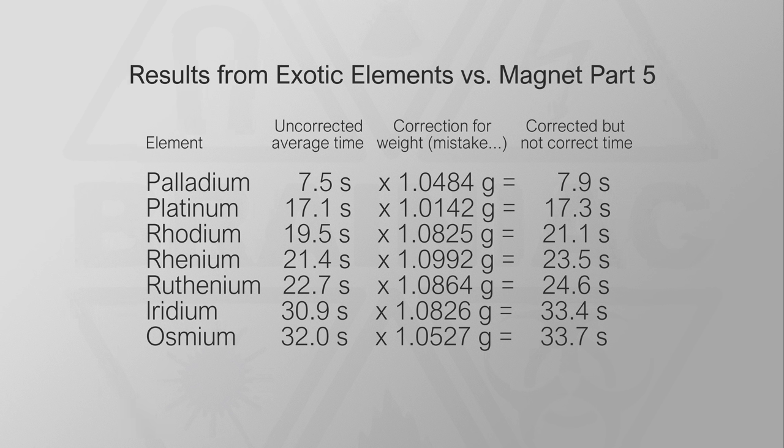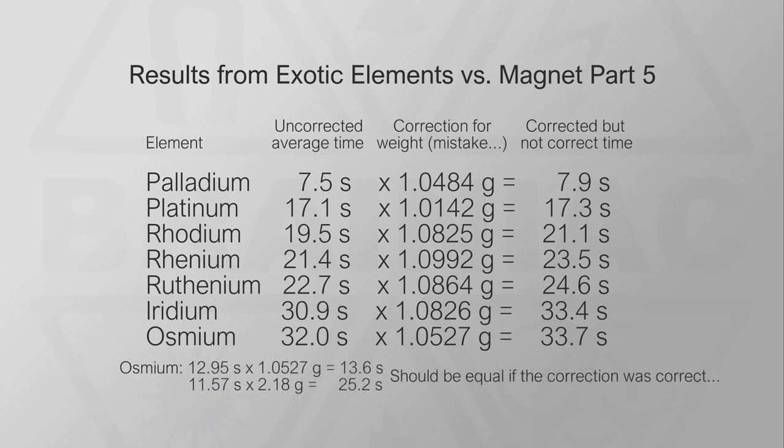I simply took the time and multiplied it with the weight. This way, I did end up correcting for the heavier samples having a faster time, but that was a lucky guess and the correction was way too big. The tests with osmium show that double the weight volume from 1 to 2 grams only makes the time around 10% faster. I corrected like it would be double as fast. Oops.